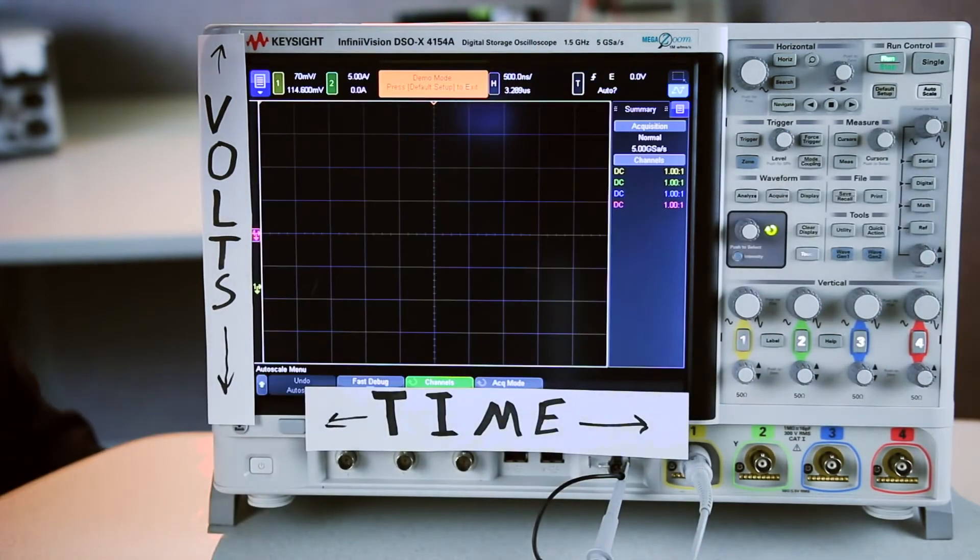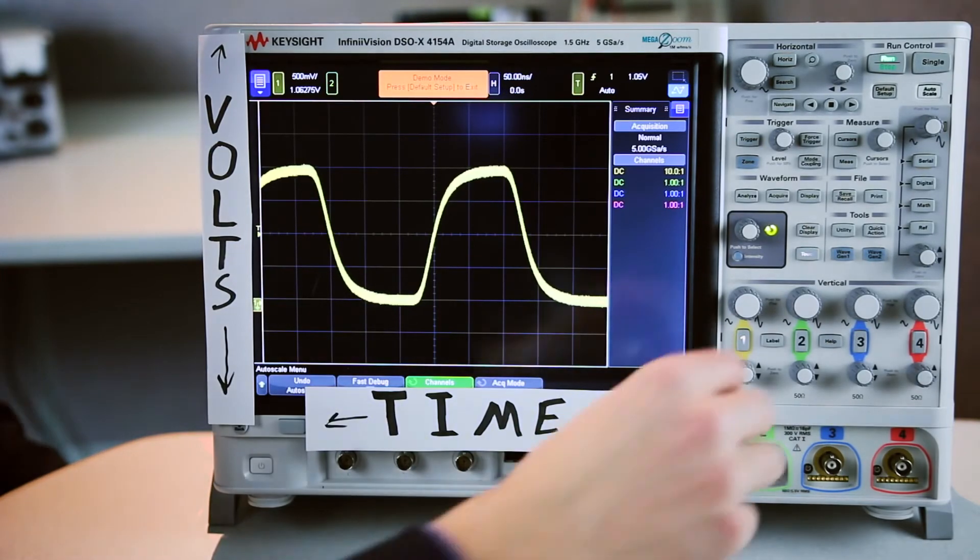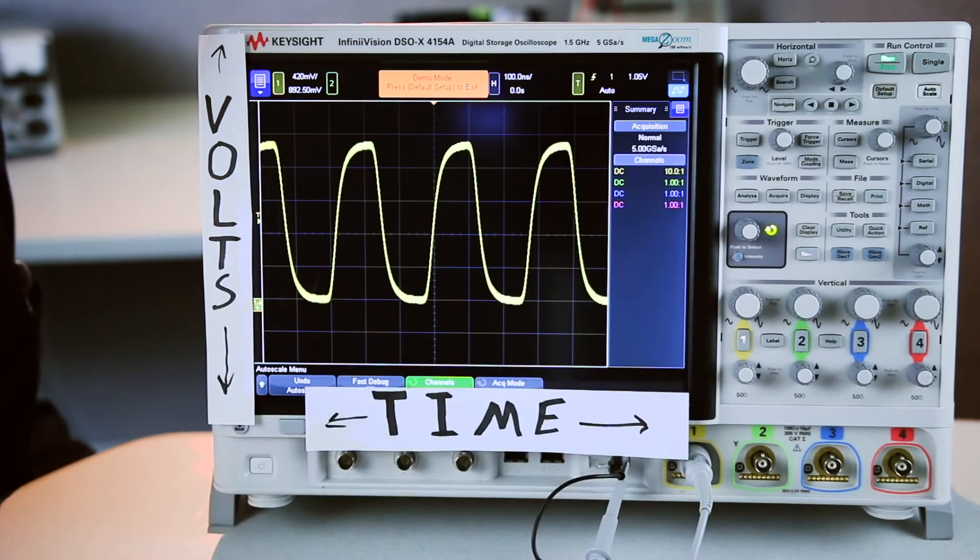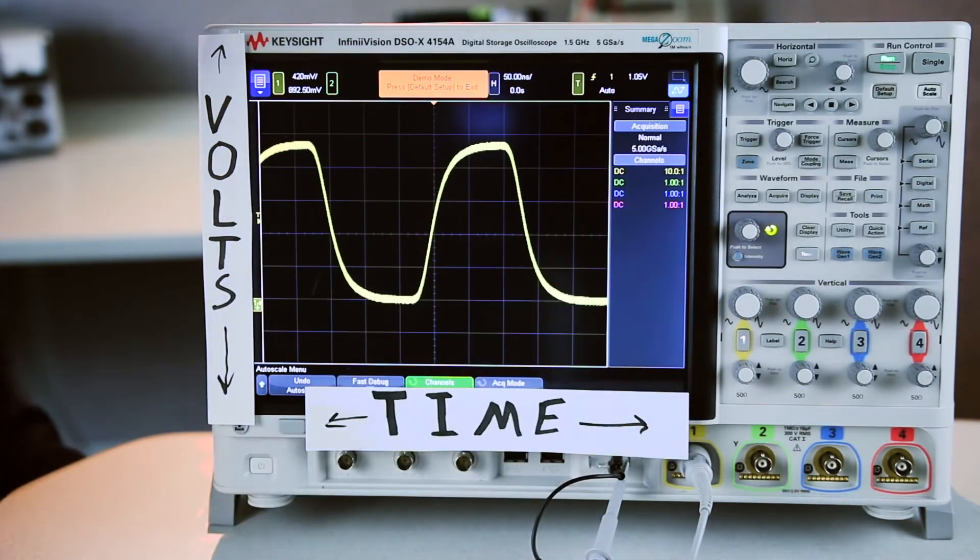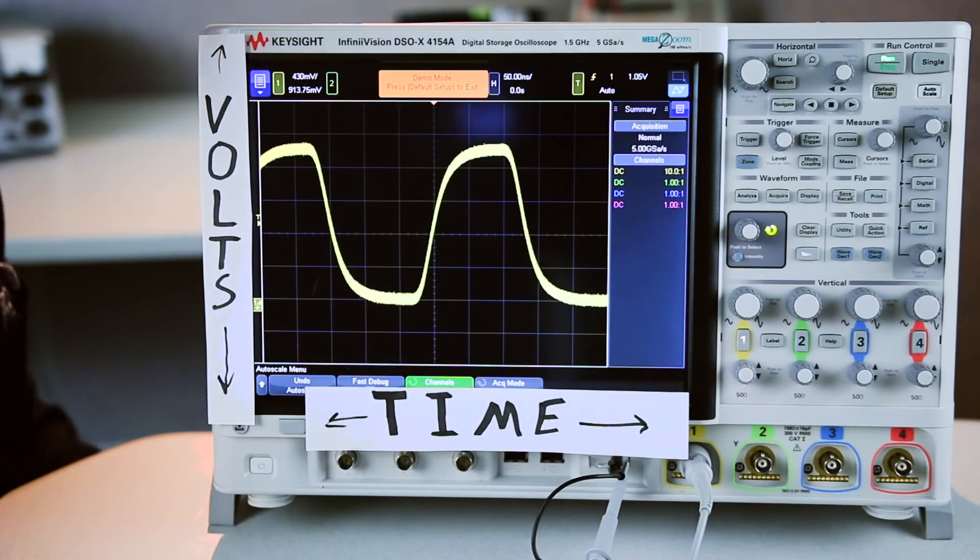When you hit that button the scope is going to automatically set up the signal how it thinks you want to see it and then you can go in and use these knobs to adjust the signal to be precisely the way you want it to be. So as a beginner I recommend using the auto scale button to get close and then using the knobs to scale and tune the signal to be precisely what you want to see.